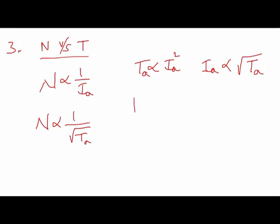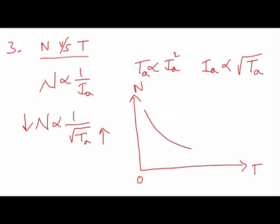So the speed versus torque characteristic has the same hyperbolic shape as the speed versus armature current characteristic. In summary, the speed-IA and speed-torque characteristics of the DC series motor are almost the same in shape. This concludes the discussion of the three characteristics of the DC series motor. Thank you.